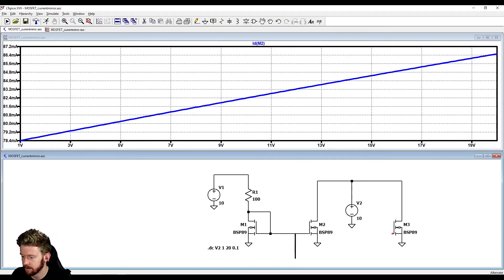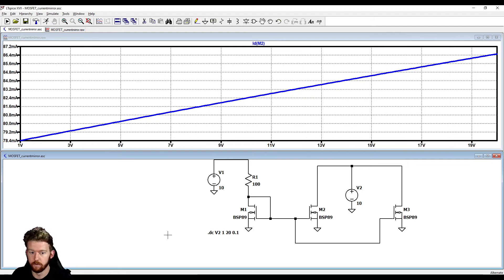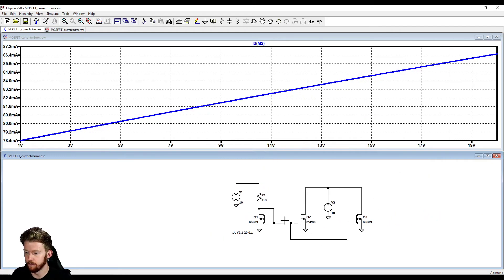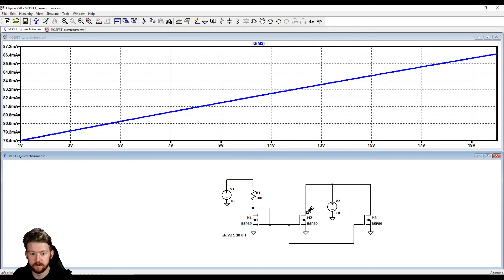And the cool thing about this is that we can actually extend this to any number of MOSFETs. So if I extend this out to a third MOSFET here and run it once more we can see that for our first MOSFET we have our 79 milliamps because it's a fixed drain source voltage. For this second MOSFET we have that performance and then for our third MOSFET we have the exact same performance. Okay so we can mirror this current out to any number of MOSFETs and get a good constant reference.